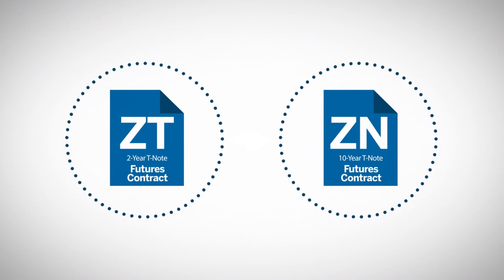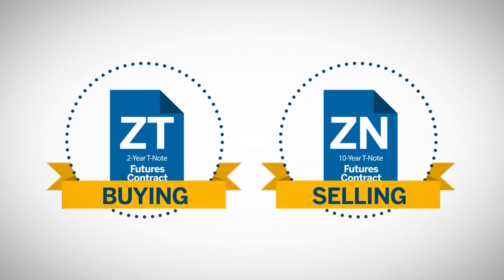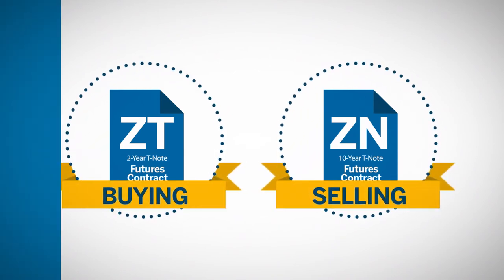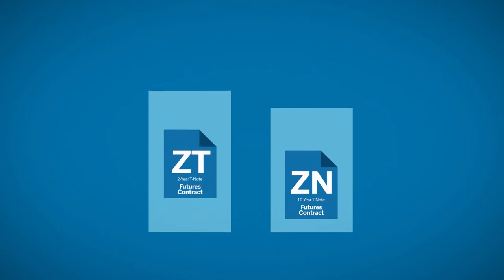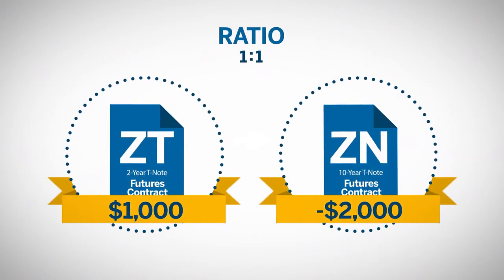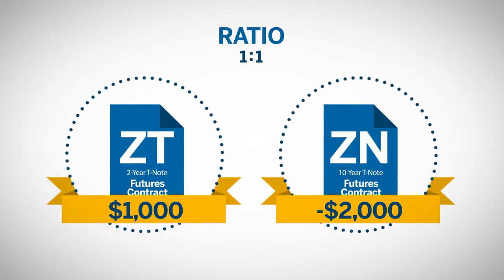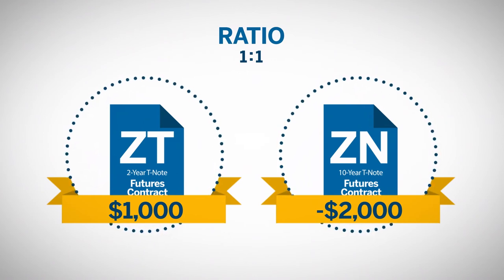Buying the spread means buying the two-year notes and selling the ten-year notes. Because the direction of the market can move at the same time as the yield curve changes shape, the trader can lose on a spread trade because the impact of the market can be larger than the impact of the change in the spread. In order to remove most of the effects of market direction, the spread between the yields can be isolated.